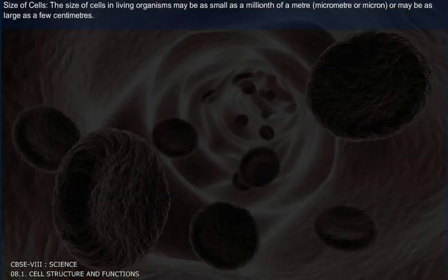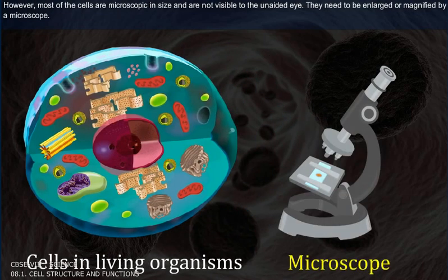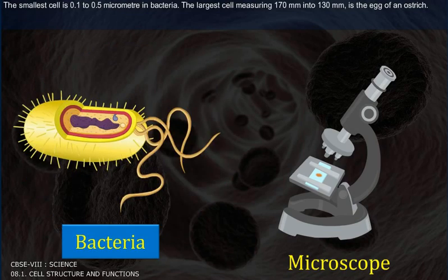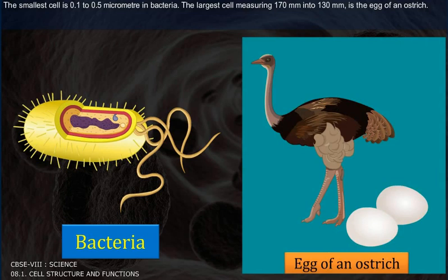The size of cells in living organisms may be as small as a millionth of a meter (micrometer or micron) or as large as a few centimeters. Most cells are microscopic and not visible to the unaided eye. The smallest cell is 0.1 to 0.5 micrometers, found in bacteria. The largest cell, measuring 170 mm × 130 mm, is the egg of an ostrich.